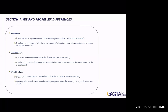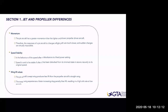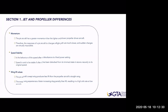Speed stability is the behavior of speed after a disturbance at a fixed power setting. Speed is said to be stable if, after being disturbed from its trim state, it returns naturally to its original speed. Regarding wing lift values: the jet aircraft's swept wing produces less lift than the propeller aircraft's straight wing. The swept wing experiences a faster increasing drag penalty than lift, resulting in a higher sink rate at low speed.